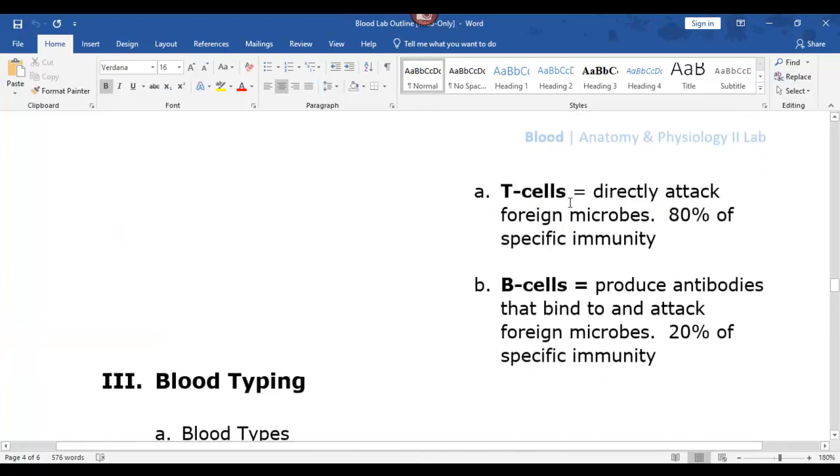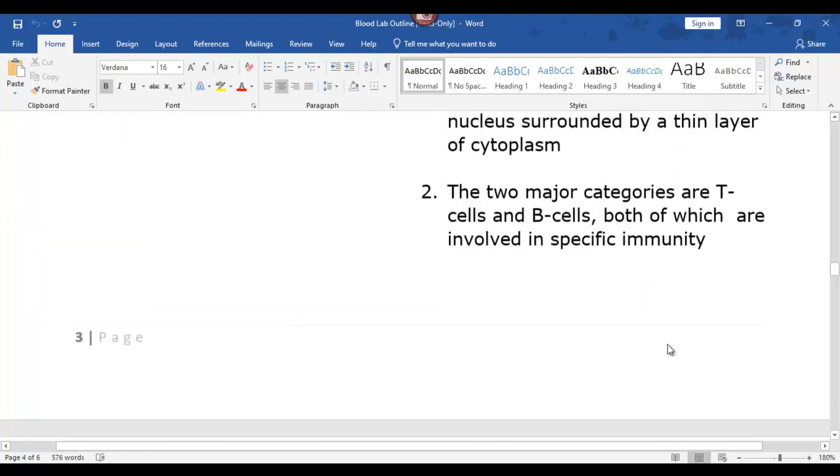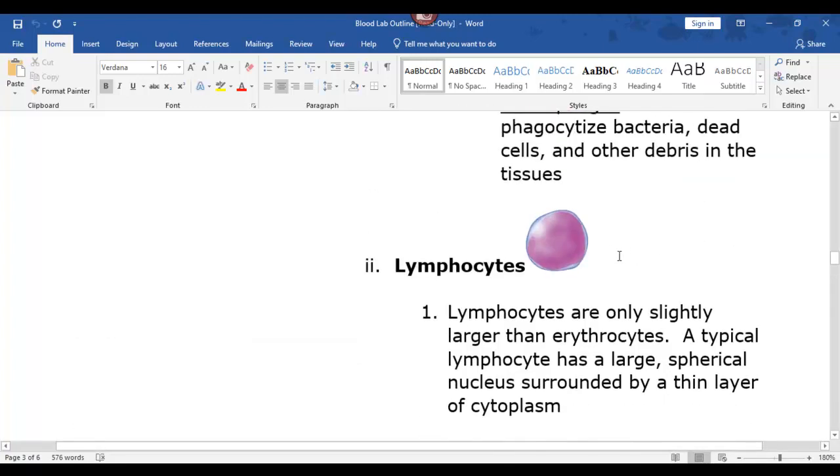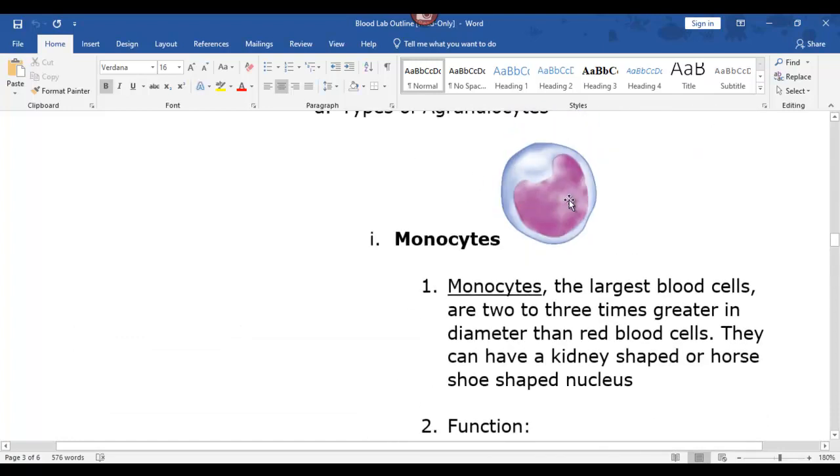And T cells are 80% of specific immunity and B cells are 20%. So we're going to definitely talk about that later. But it's called specific immunity because they only attack whatever their stimulus is that they were produced from. A monocyte, if it doesn't recognize you, you're dead. It's not specific.